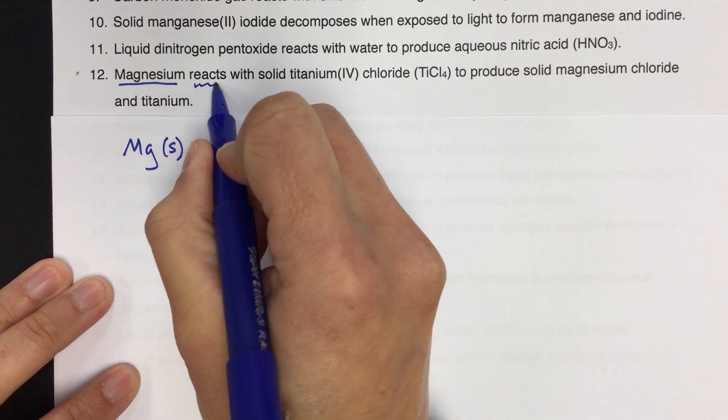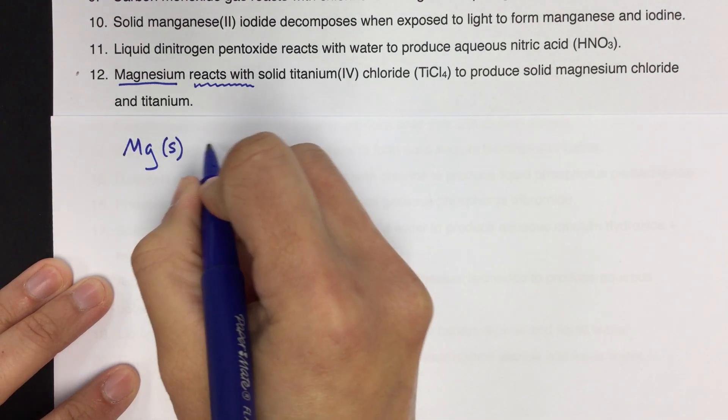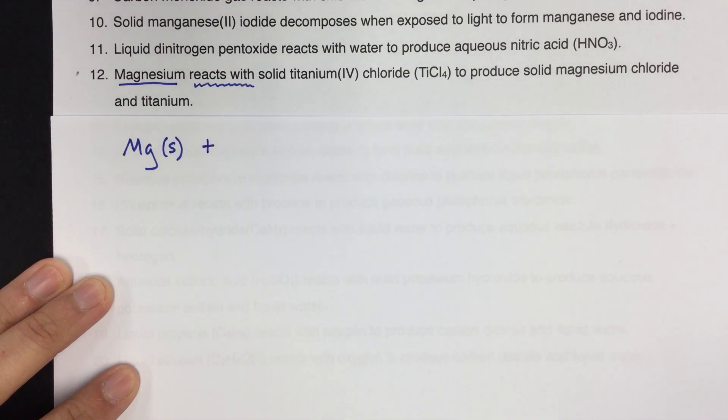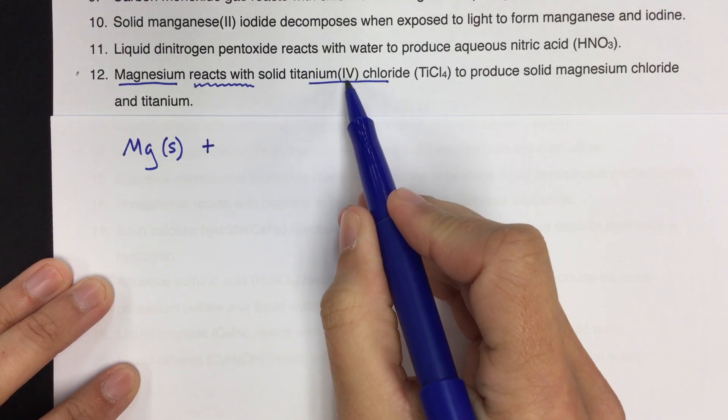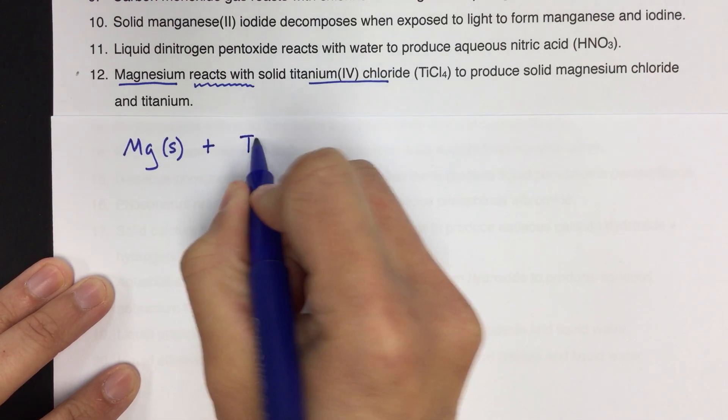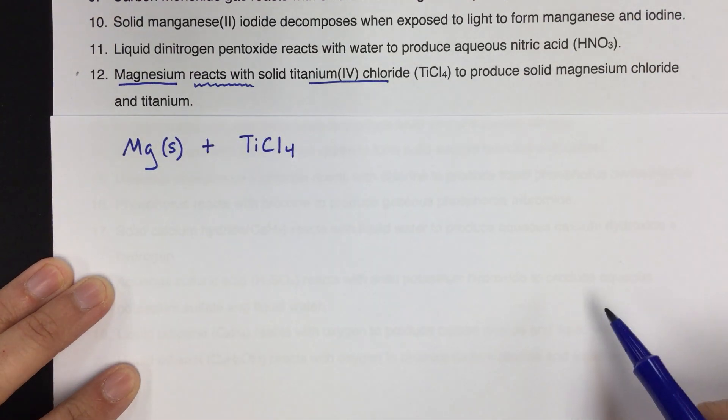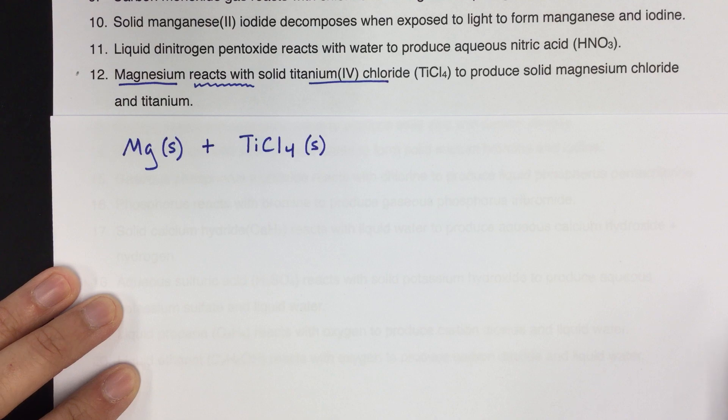And then we have this 'reacts with' phrase. So 'reacts with' means that I'm adding magnesium to something. So we're going to translate that into a plus sign in our chemical equation. Solid titanium chloride. So this is going to be another reactant. And they're being very nice here and they give you the formula. But remember the Roman numeral tells you the charge. So titanium would have a positive 4 charge. Chloride has a negative 1 charge. So the formula is going to be TiCl4. Make sure you leave some space here for balancing. And for the phase of this, titanium 4 chloride, it's telling you the phase is solid.